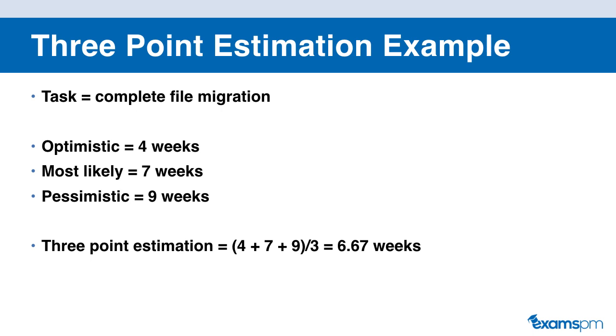And if we use PERT estimation, we will give more weight to the most likely scenario of seven weeks. So if we're using PERT estimation, we're doing four plus seven times four plus nine divided by six, and this gives us 6.83 weeks. On your upcoming PMP exam, if the question doesn't specify to use the three-point estimation, you can assume that by default, the question is asking you for the PERT estimation. So you can use the formula optimistic plus four times most likely plus pessimistic divided by six.